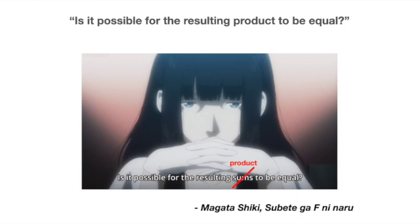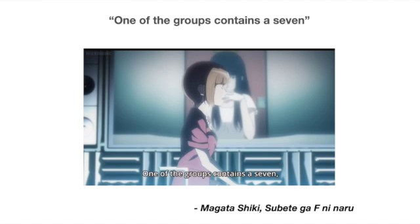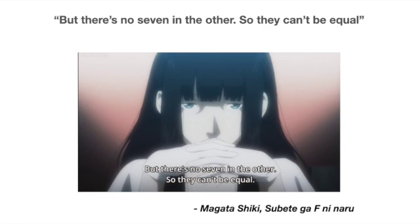She then says that one group of numbers contains 7 while the other group doesn't. So it is impossible for the product of each group to be equal, and hence, 7 is seen as the loneliest number out of the first 10 numbers.